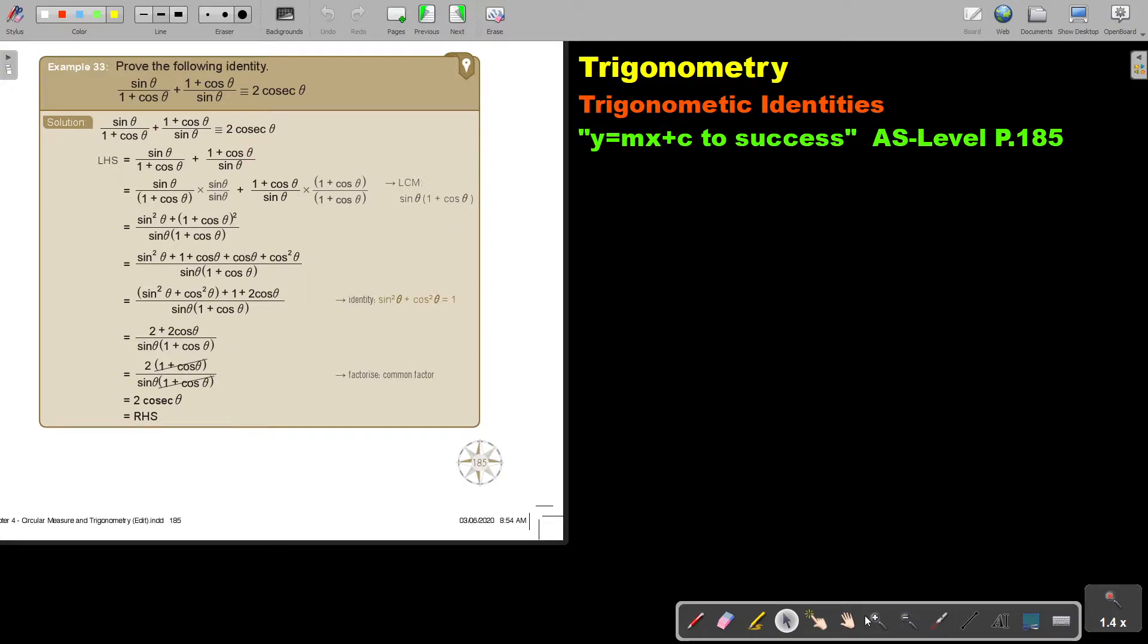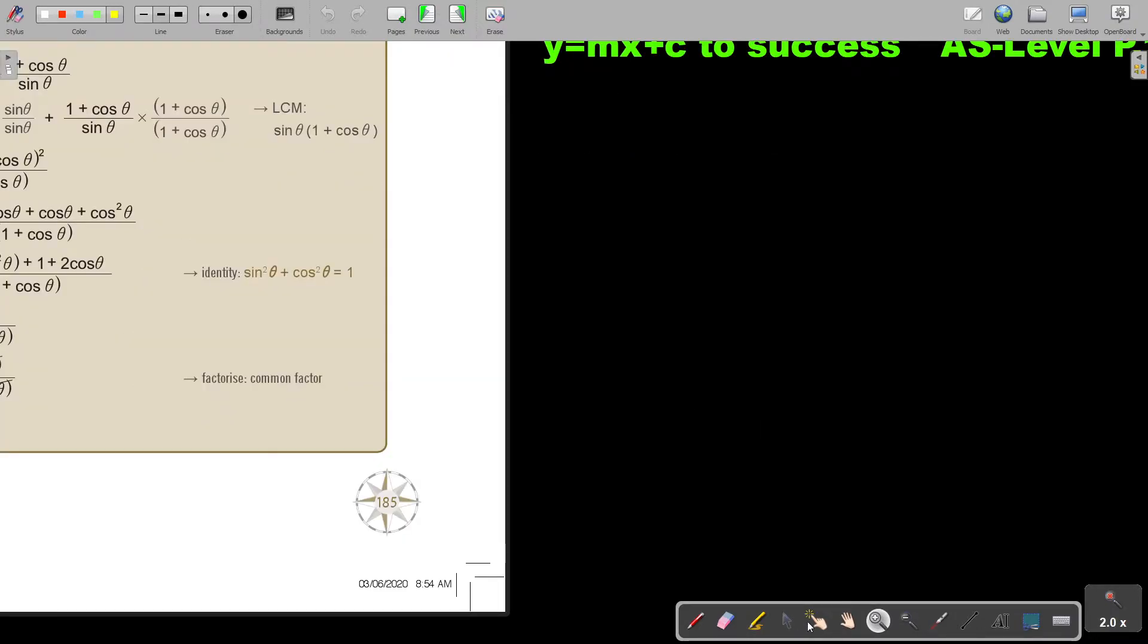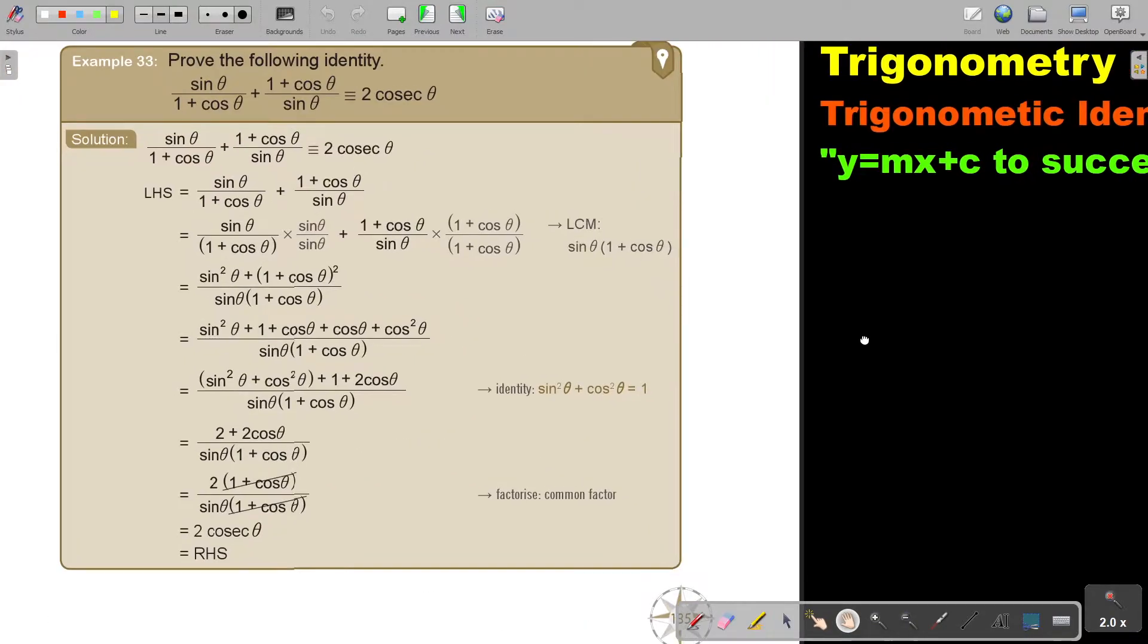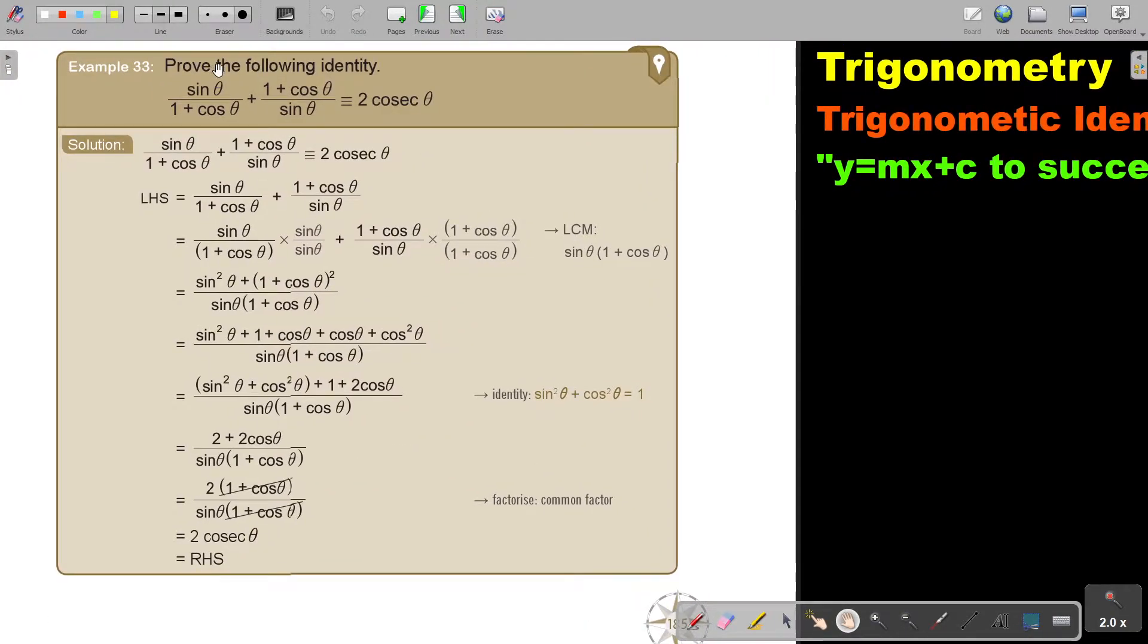Let's look at this example. Let's just make it a bit bigger. There it is. Proof the following identity. Now, if you check, there is two terms on this side and then only one term, so definitely I'm going to start with this term, the left-hand side.